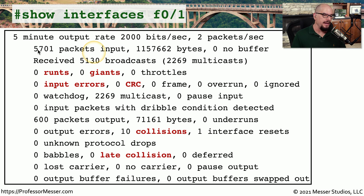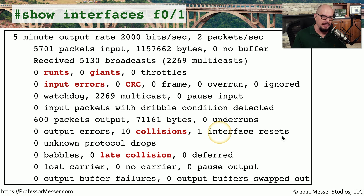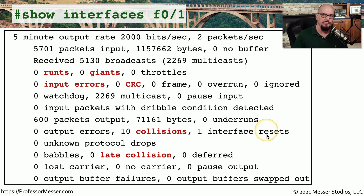You can see on this interface that thousands of packets have been input. We can see broadcasts on the network, but there have been instances where collisions and interface resets have occurred. So we might want to look at the configuration of this switch and the device connected to this interface to see if both are configured properly.